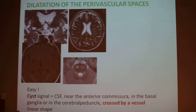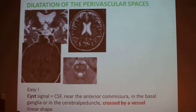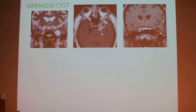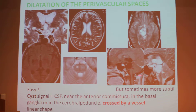Dilatation of perivascular spaces are the cystic lesions we can often see. The diagnosis is often easy because the location is specific — around the anterior hemisura, which we can see like a moustache, in the peduncle, or as little lines full of CSF. Sometimes it's more complicated because these cystic spaces are huge, and they are especially huge in the peduncle location.